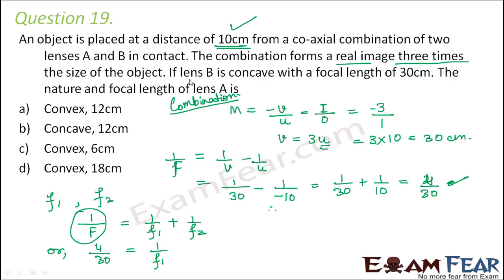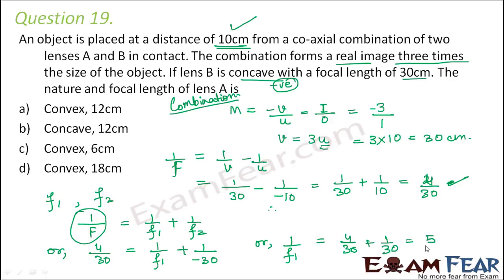For lens B, we already know it is a concave lens with focal length 30 cm. For a concave lens the focal length is always negative, so F2 = −30. Therefore 1/F1 = 4/30 + 1/30, which equals 5/30. So F1 = 30/5 = 6 cm. The type of lens A is convex because the focal length is positive, and the focal length value is 6 centimeters.